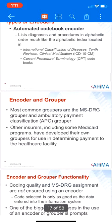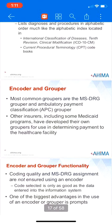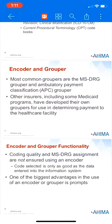One of the biggest advantages in the use of an encoder or grouper is prompts. For example, if a higher paying MS-DRG can be assigned with the addition of a specific diagnosis, specific procedure, complication and comorbidity, or major complication and comorbidity, then the computer will ask the coder if any of them are present.